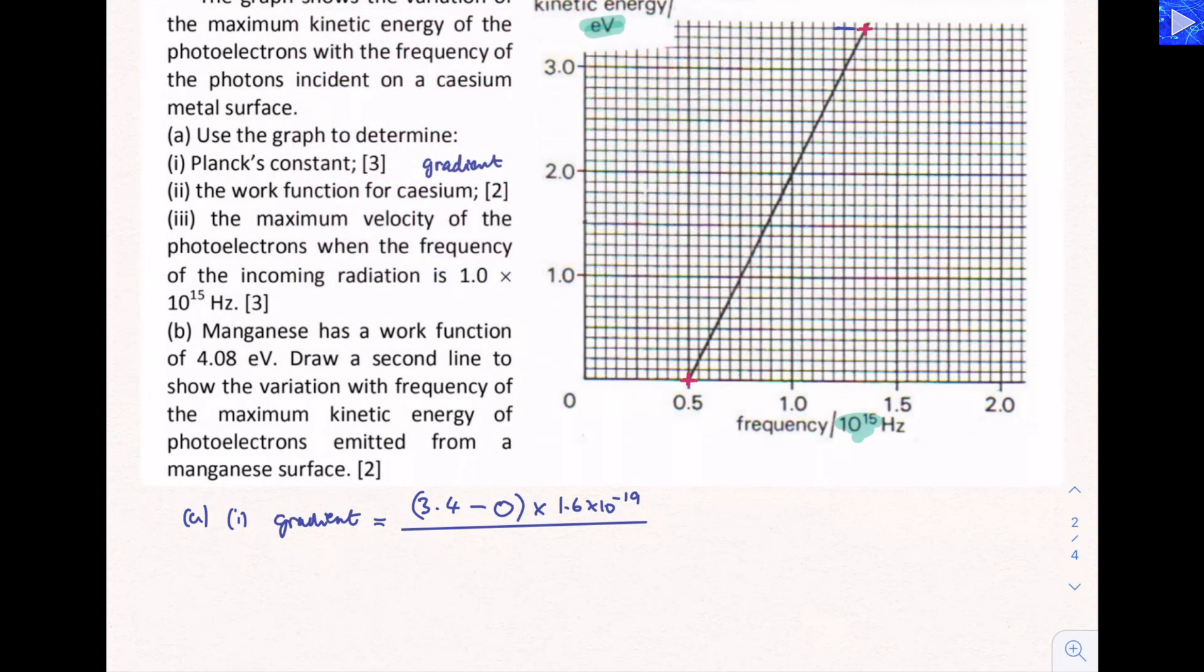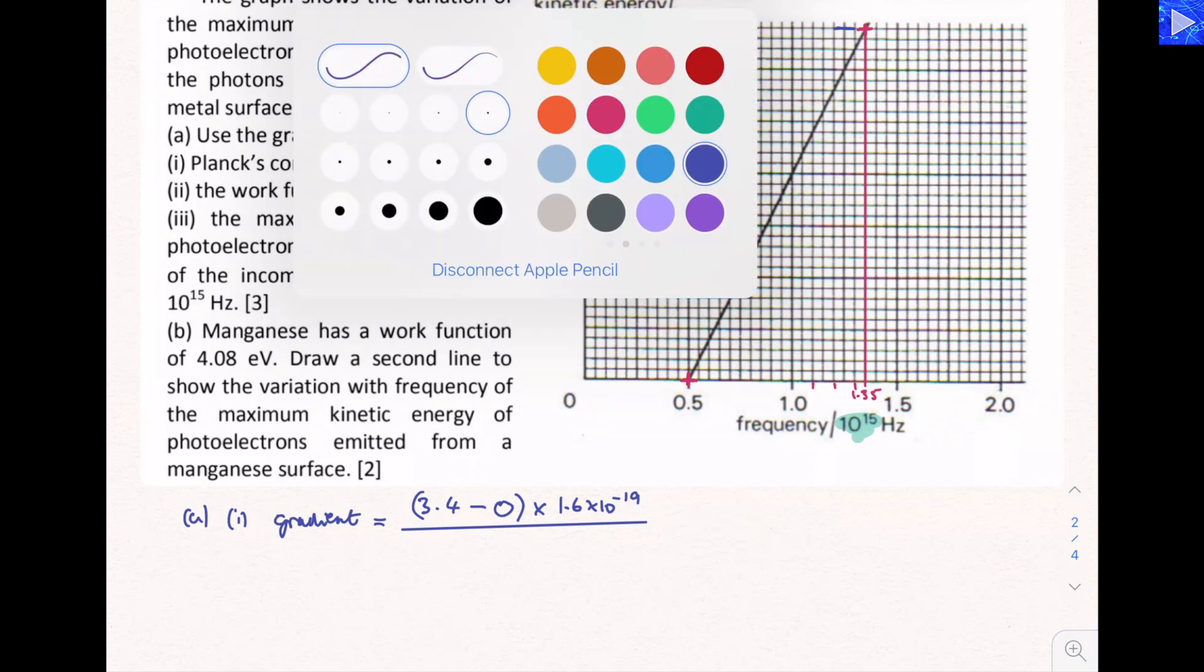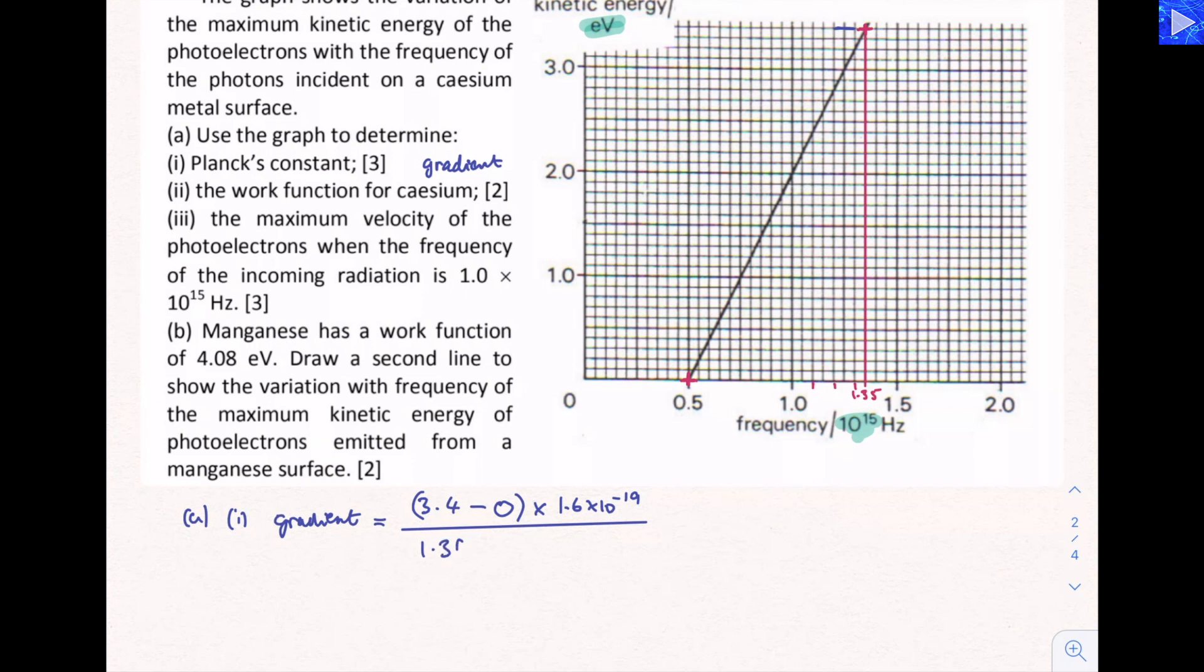So if I just draw a line down from there, that's 1.1, 1.2, 1.3, 1.35 because this is going up in 0.05's per small grid square. So that's 1.35 minus 0.50, and also include 10 to the 15 there for the 10 to the 15 hertz. So when we substitute the values into a calculator and work that out, we're going to get 6.40 times 10 to the minus 34 joule seconds for Planck's constant.